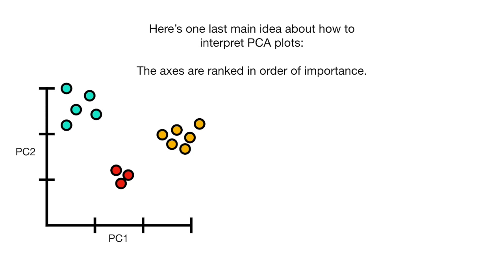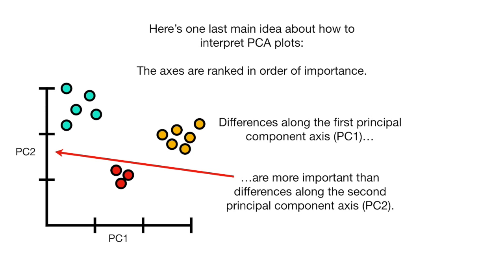Here's one last main idea about how to interpret PCA plots. The axes are ranked in order of importance. Differences among the first principal component axis, PC1, are more important than differences along the second principal component axis, PC2.